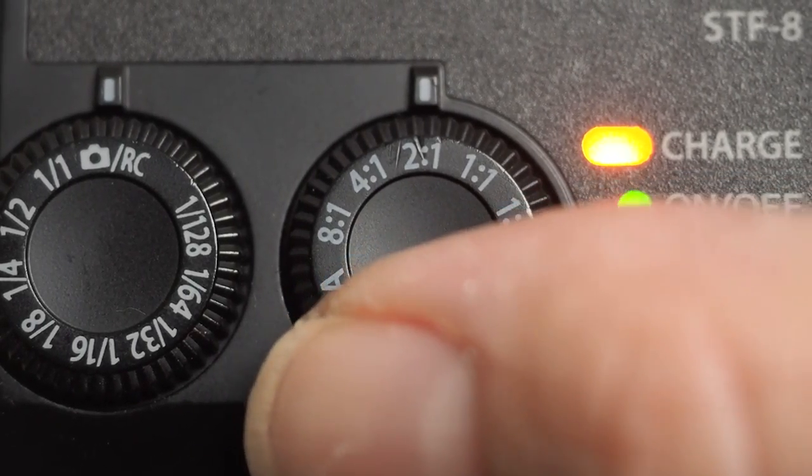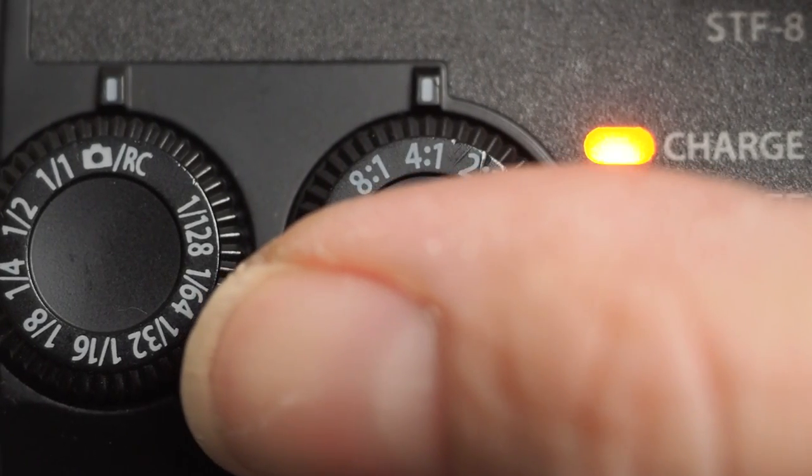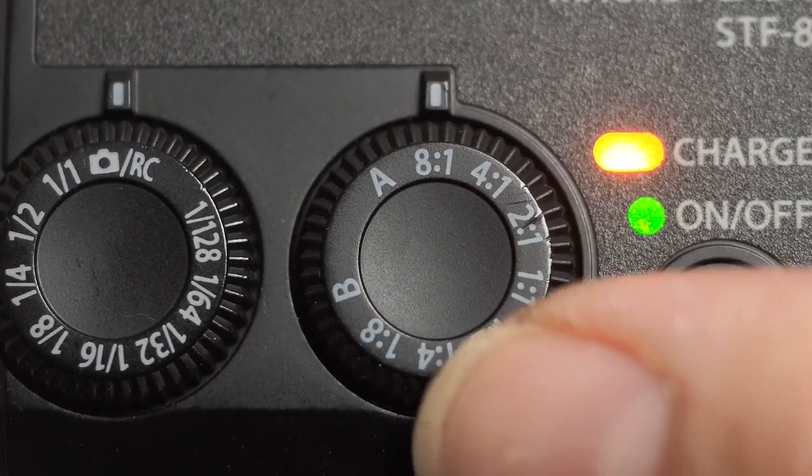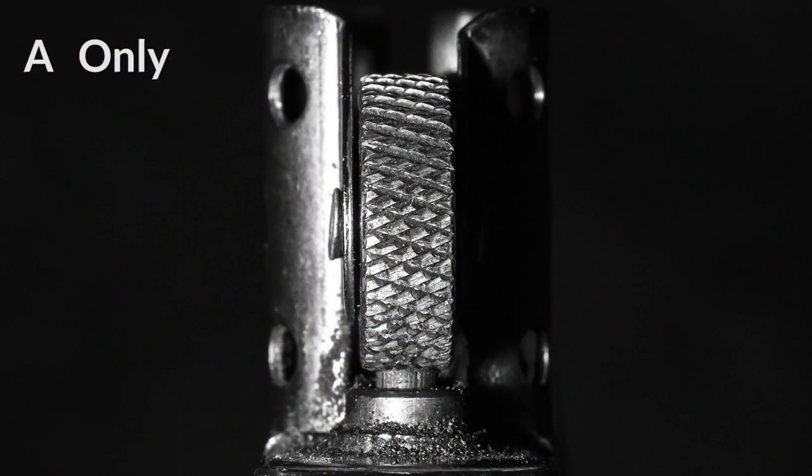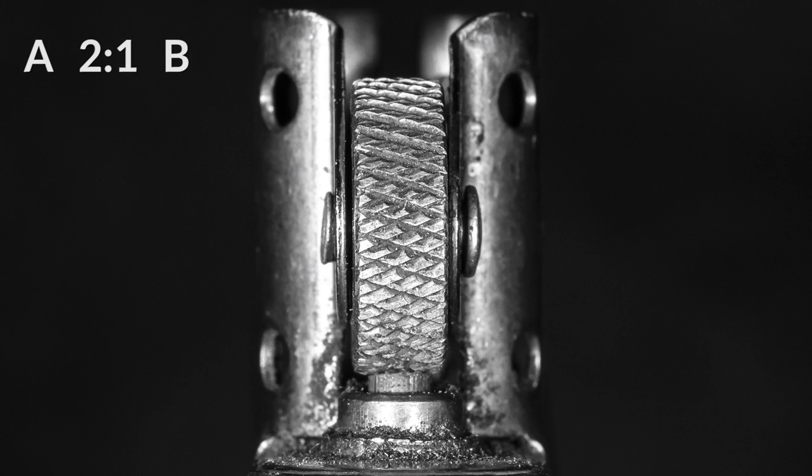Switch to 2-1 and flash A will be brighter than flash B by one stop. 4-1 will make flash A two stops brighter than B, 8-1 three stops brighter, and if you keep going all the way around to A on its own just flash A will fire. Using these settings can help to create a sense of three dimension and depth in your photos.